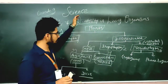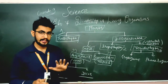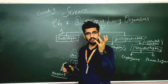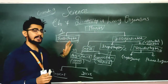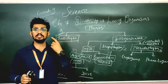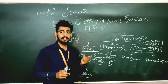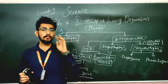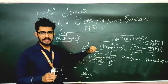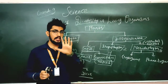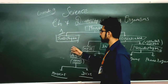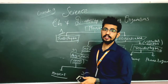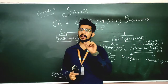Let us revise what we have seen today. We started with the five kingdoms given by Whittaker: Monera, Protista, Fungi, Plantae, and Animalia. These are the five kingdoms. The fourth kingdom, Plantae, has five divisions. The first and most basic plants are Thallophyta, which have no proper differentiation of roots, shoots, or structures.